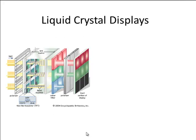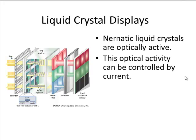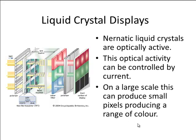LCD screens — liquid crystal displays, as found on some TVs — also use polarization. Nematic liquid crystals are optically active, and even better, their optical activity can be controlled by the current passing through them. This means you can control how much light passes through different filters by controlling the current, which allows you to control the different colors passing through different filter sets. Each such arrangement produces a small pixel with a range of different colors — perfect for displaying on a TV screen.